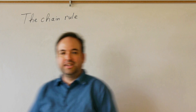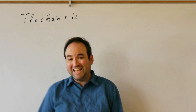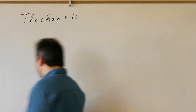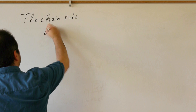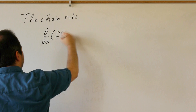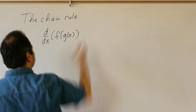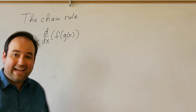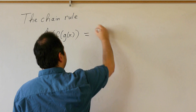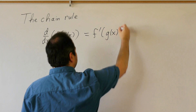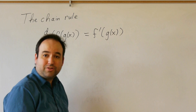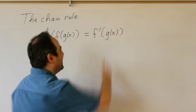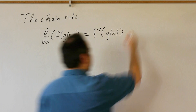The method of substitution comes from the differentiation method called the chain rule. If I take the derivative with respect to x of a function f of another function g of x, the first thing you do is differentiate the f function to get f prime, evaluate that at g of x, and then multiply times the derivative of g of x.